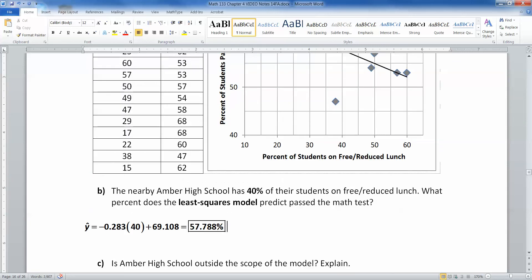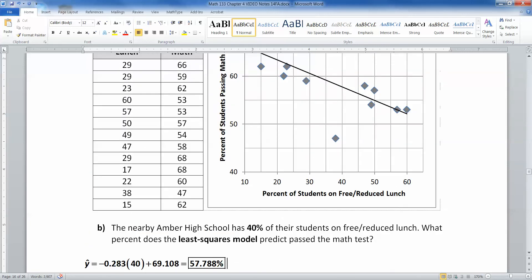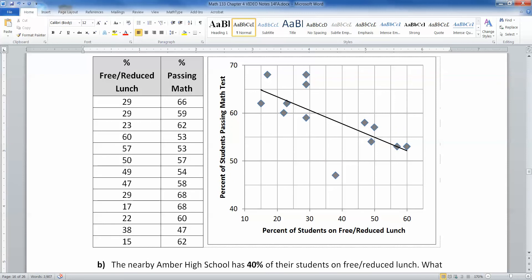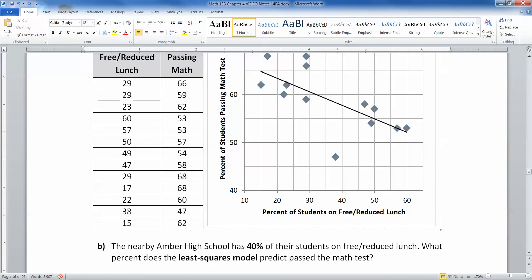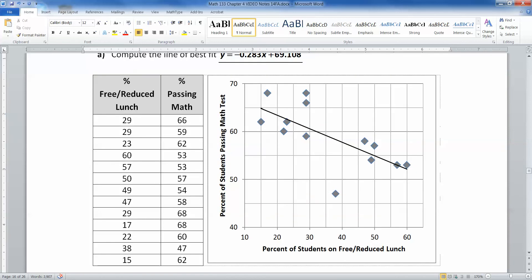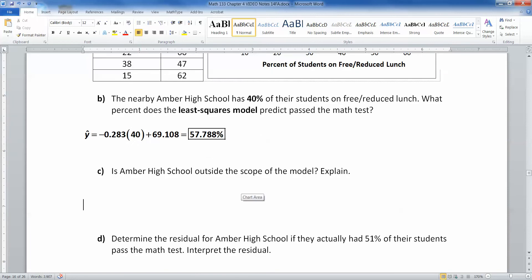Now is Amber High School outside of the scope of the model? That's a good question. When you look at 40, 40 was the percent on free reduced lunch. 40 is right in the middle of the data set. So that's big fat no, it is not. Being outside the scope of the model means that you're far away to the right or far away to the left. And that is not the case. 40% is right in the middle of our data. If we had 80%, that would be outside.